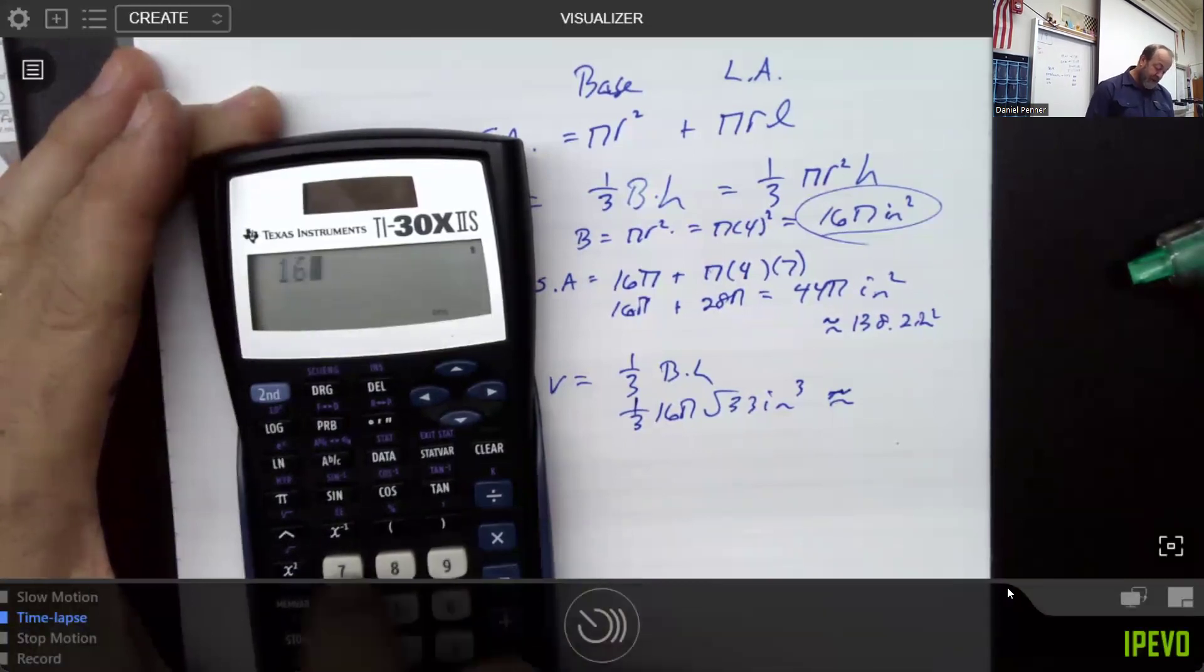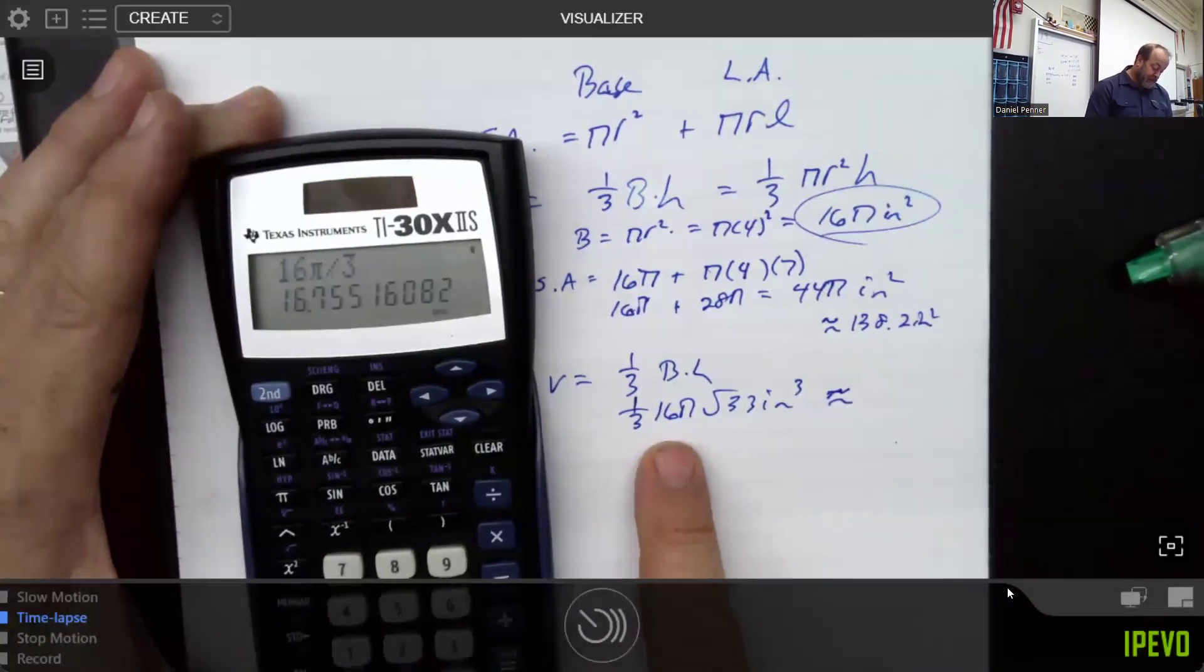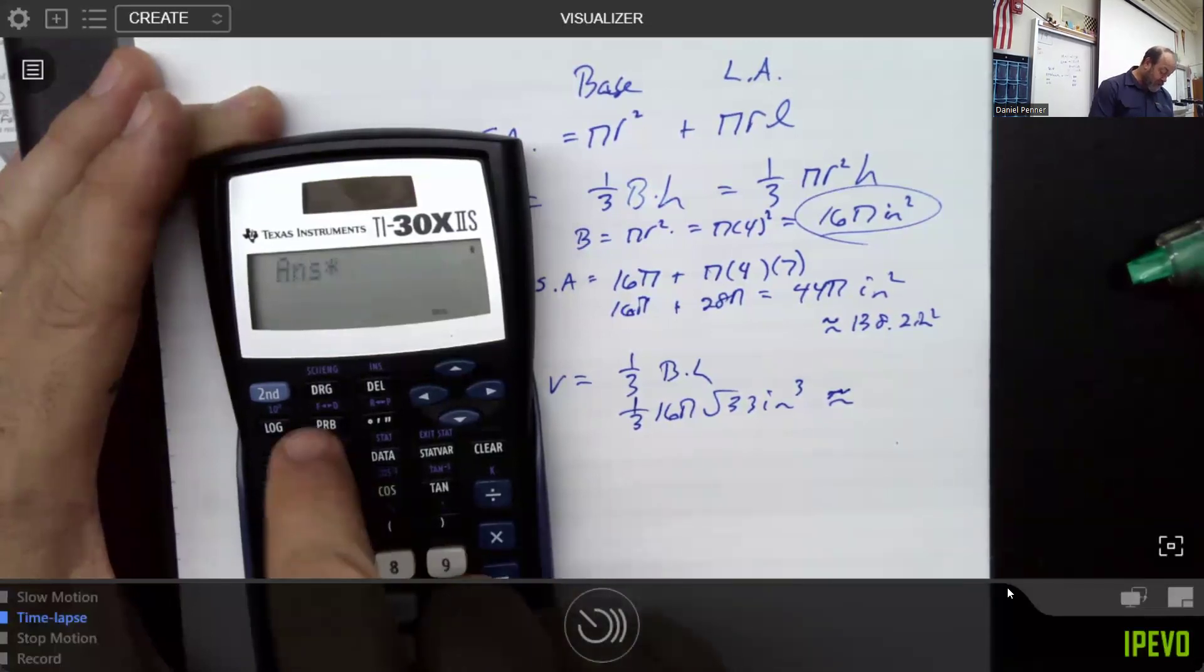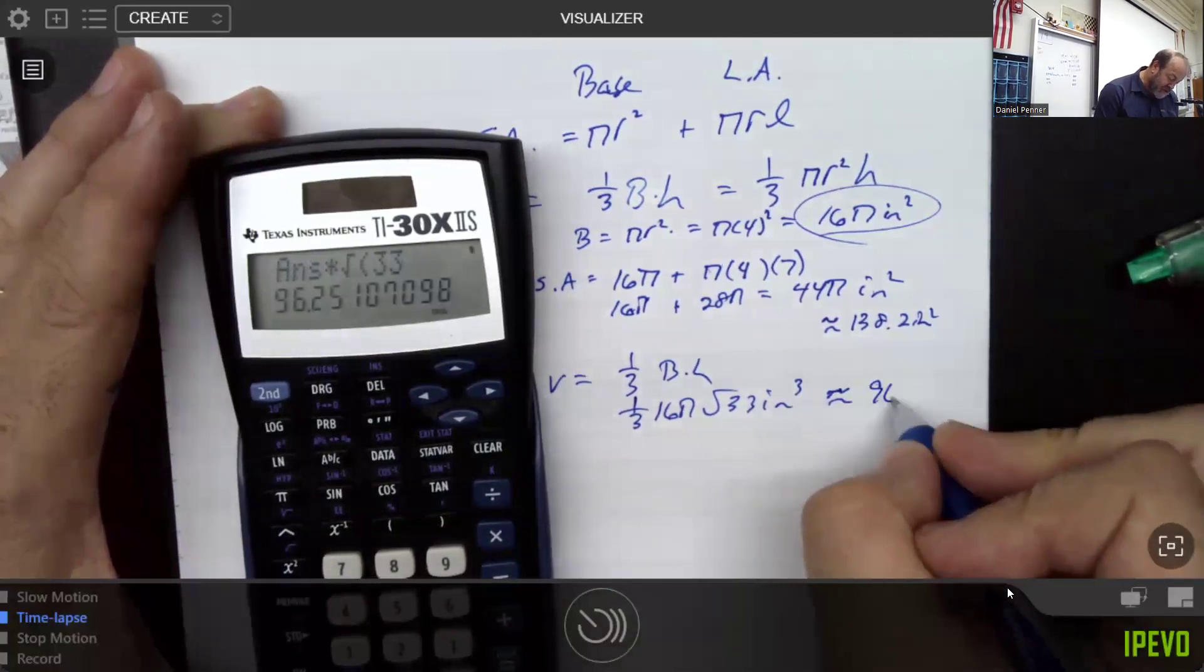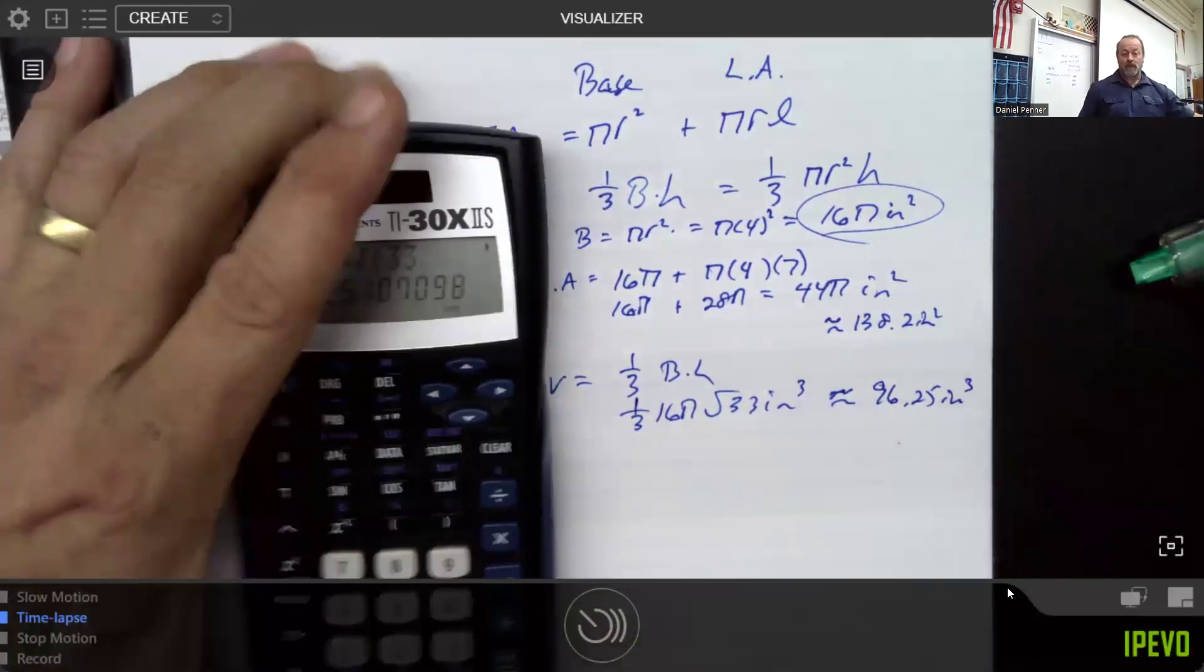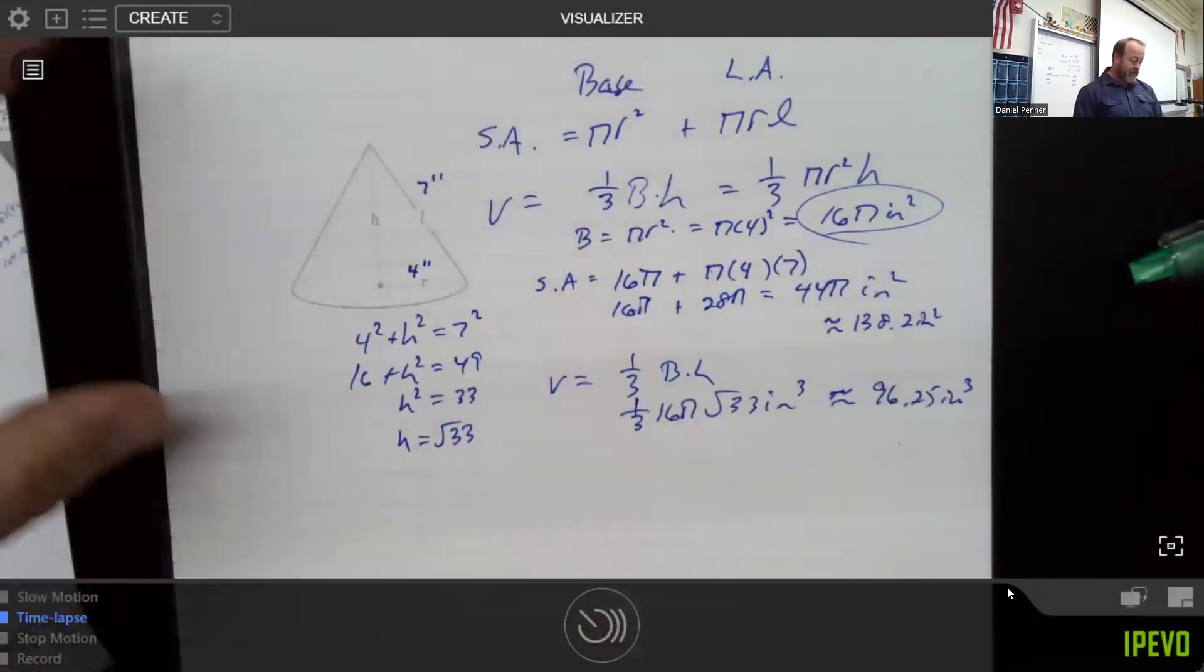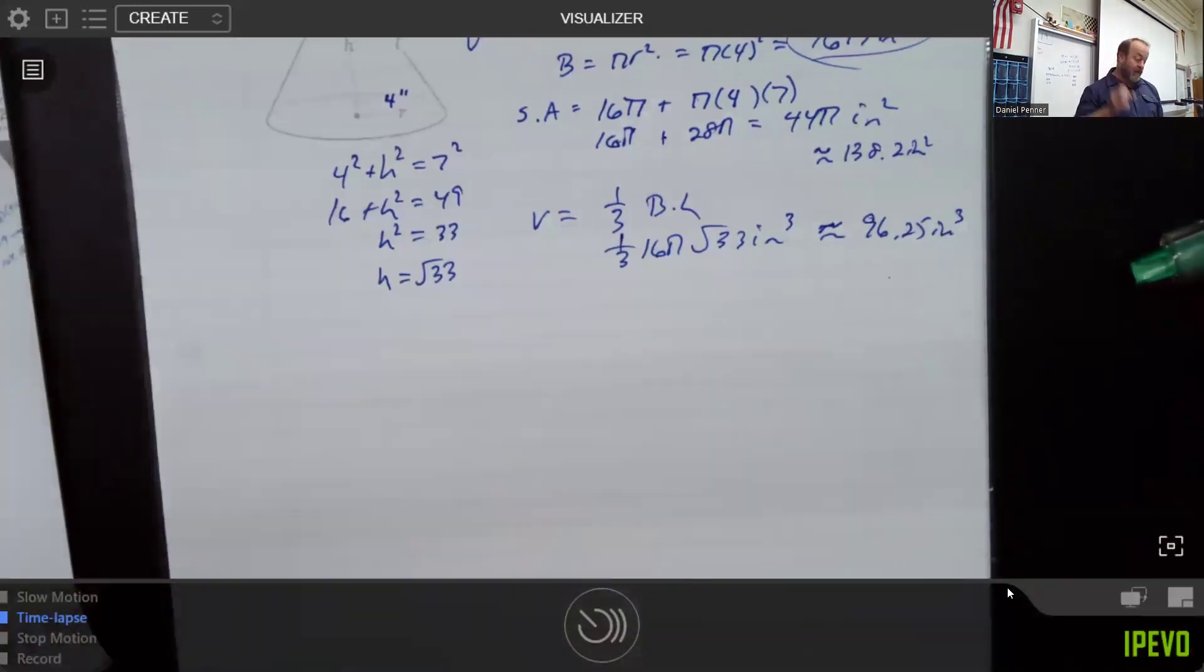So most people would take a moment and finish that out. So if we took 16 pi and divided it by three, and then multiplied that by the square root of 33, there we are, we're at 96.25 inches cubed. Cool. There we've got ourselves our volume of our cone. And we've got our surface area of a cone.